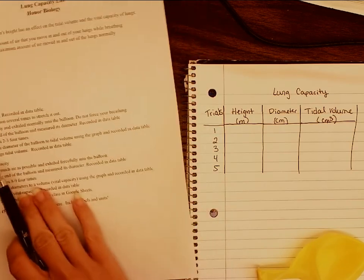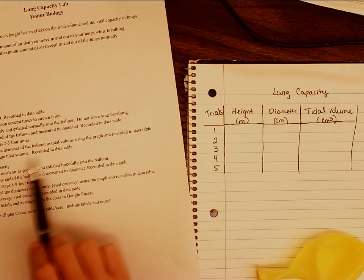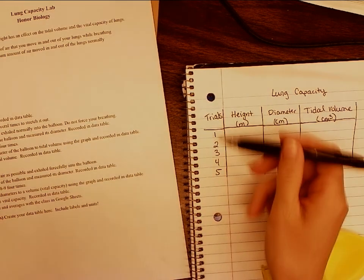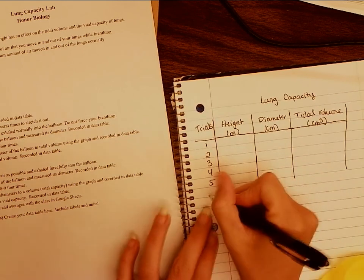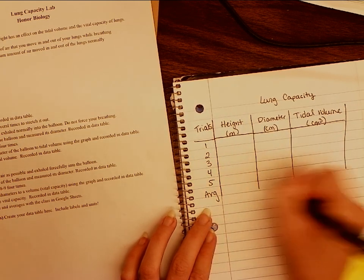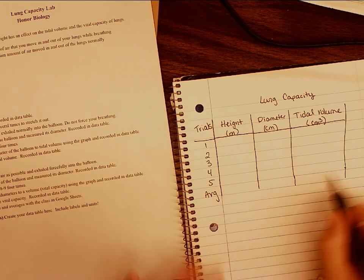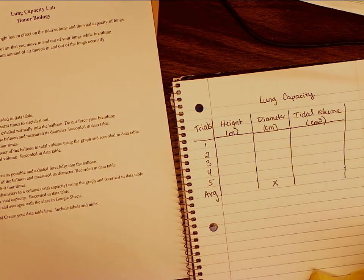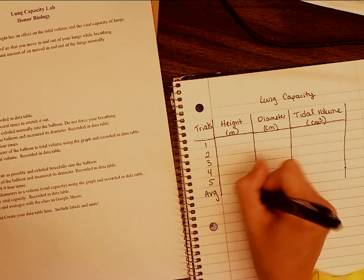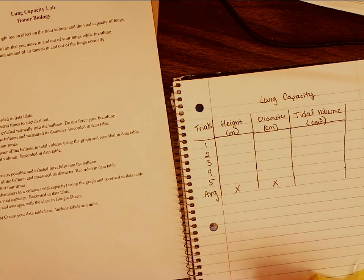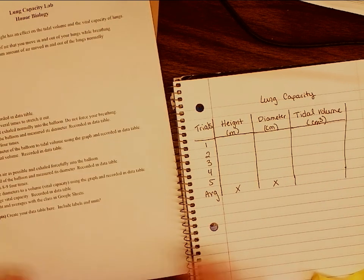Step number seven, we are going to find the average tidal volume and record in the data table. So down here, after five trials, I can have my average. I can just make my lines go down a little bit further. And then I'll record that here. We don't necessarily need to have an average diameter. Average height or height is going to be the same for all five trials. So this is the one that we're going to be looking for. And that's how we set this up. Pretty straightforward.